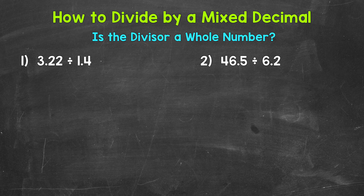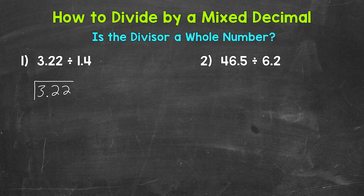Let's jump into number 1 where we have 3 and 22 hundredths divided by 1 and 4 tenths. The first thing we need to do is set this problem up so we can go through the division process. 3 and 22 hundredths is the dividend, the number we are dividing — it goes under the division bar. 1 and 4 tenths is the divisor, the number we are dividing by — it goes on the outside of the division bar.